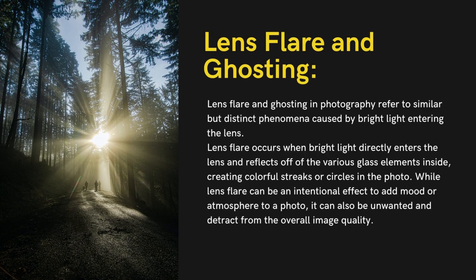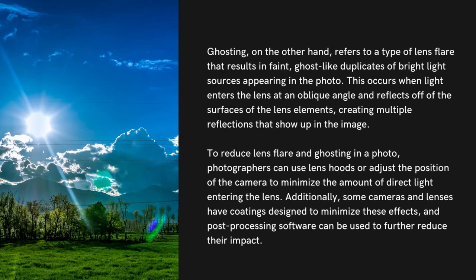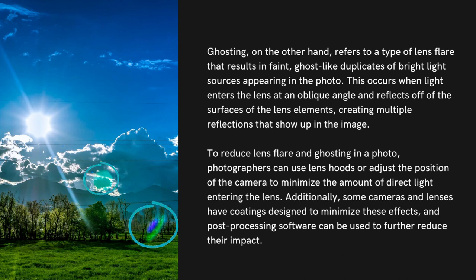Lens flare occurs when bright light directly enters the lens and reflects off the various glass elements inside, creating colorful streaks or circles in the photo. While lens flare can be an intentional effect to add mood or atmosphere, it can also be unwanted and detract from overall image quality. Ghosting refers to a type of lens flare that results in faint ghost-like duplicates of bright light sources appearing in the photo, caused by light entering the lens at an oblique angle and creating multiple reflections. To reduce lens flare and ghosting, photographers can use lens hoods, adjust the camera position, rely on lens coatings, or use post-processing software.